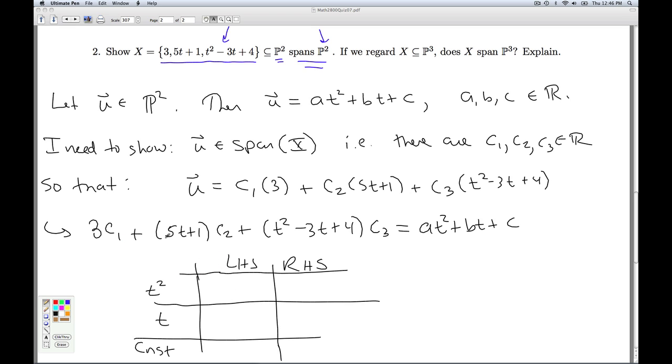So t squared, where am I going to get a t squared? I am going to get a t squared from this guy and his coefficient is c3. On the right hand side, the coefficient is a. On the left hand side, the coefficient of t, I am going to get 5c2 here minus 3c3 from there. On this hand there, it is b.